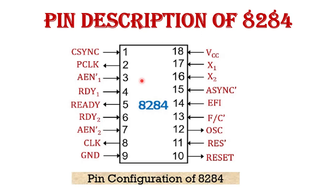Now I start the pin description. The 8284 clock generator generates the clock signal, peripheral clock signals, reset signal, and other essential signals for the 8086 or 8088 microprocessor. It is an 18-pin IC. On the right-hand side of the chip are pin numbers 1 to 9, and on the left-hand side are pin numbers 10 to 18. Pin 18 is VCC — from here we supply plus 5 volts with 10% tolerance to operate the 8284. Pins 16 and 17 are X1 and X2, which are input pins where we connect the external crystal, which acts as a frequency source for the 8284.